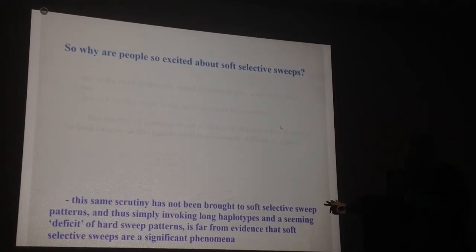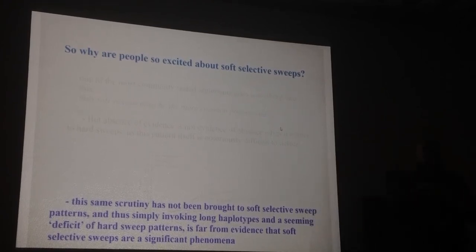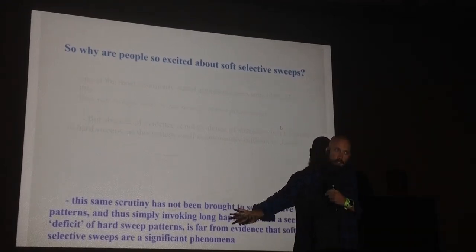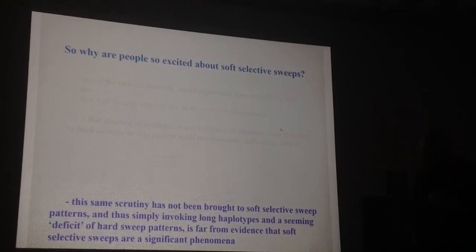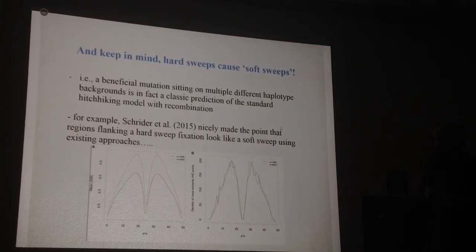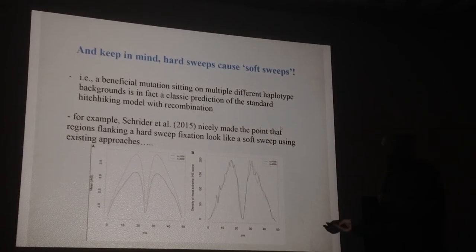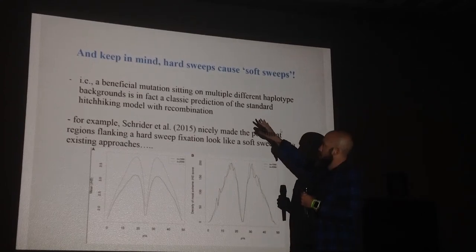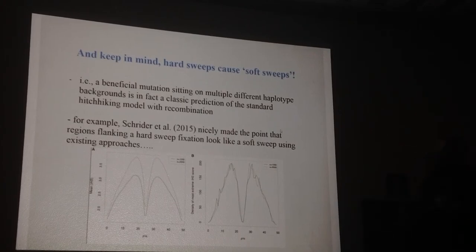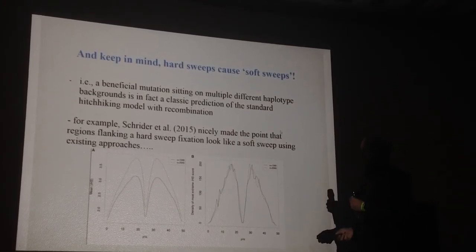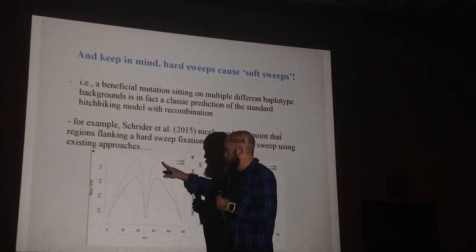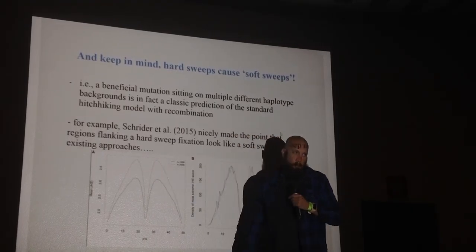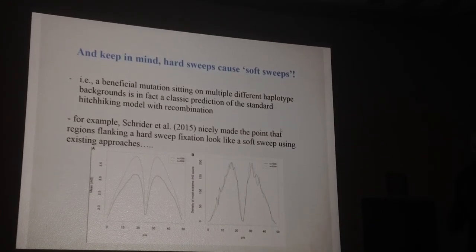This same scrutiny though really hasn't been brought to soft selective sweep patterns. The most common thing is seeing these multiple haplotypes, that is long stretches of LD. We know a lot of demographic models that do this. The kind of thinking that's gone into what demographic models can produce hard sweep patterns really hasn't gone into thinking about what demographic models can produce soft sweep patterns yet, and this needs to happen. The other thing I'll mention, and I'll close on this actually, is that hard sweeps actually cause soft sweep patterns. This is something that has only recently been talked about. This nice paper by Andy Kern's lab, by Schrider et al., made this simple case that even in our hard sweep model, we have a beneficial mutation that arises and some things recombine off. Well, that's a mutation sitting on multiple haplotypes, and that's really a standard prediction of hitchhiking models with recombination. Here they're just showing iHS in this case, something that's commonly used to describe soft sweeps, around the hard sweep fixation. This is your hard sweep fixation in the middle, and this is your soft sweep pattern the hard sweep is producing. Essentially everything produces soft sweep patterns, including hard sweeps, as sort of the bottom line here.